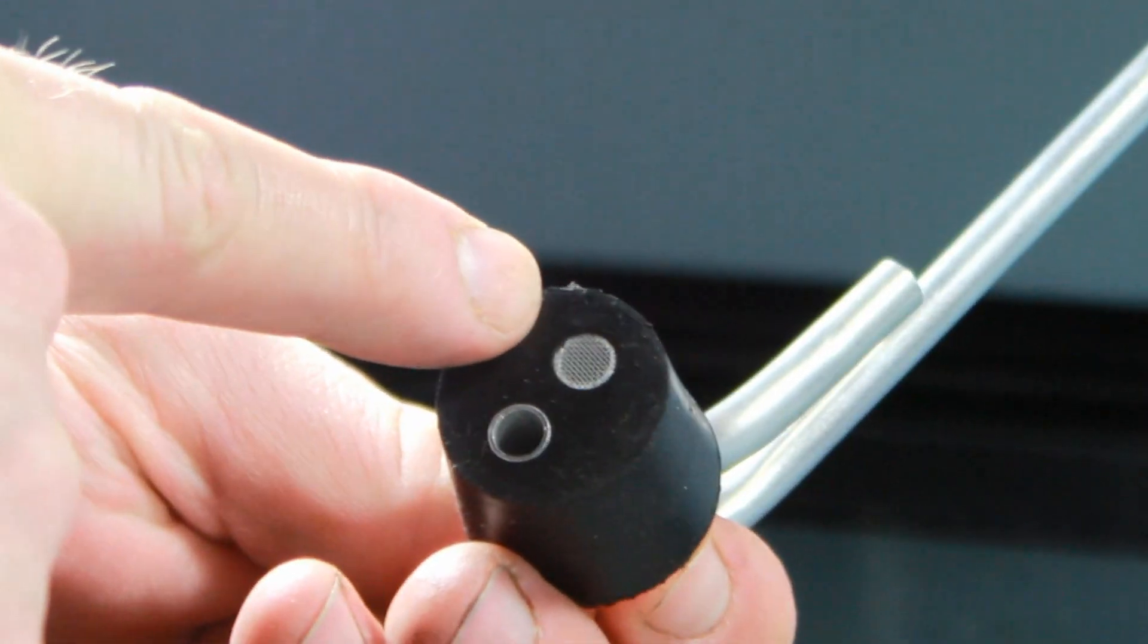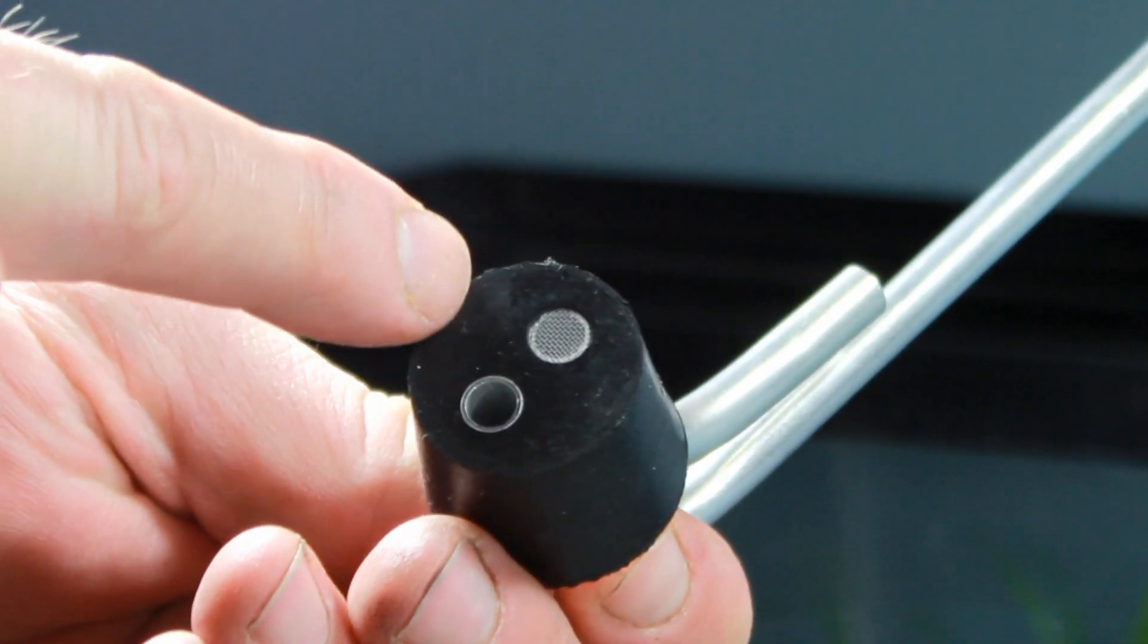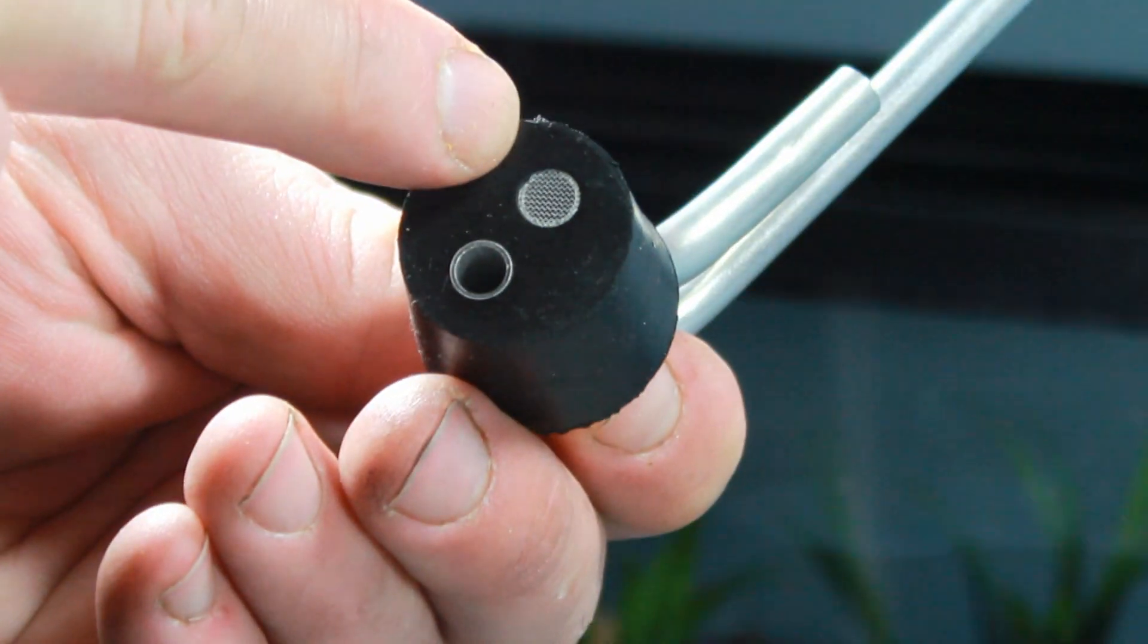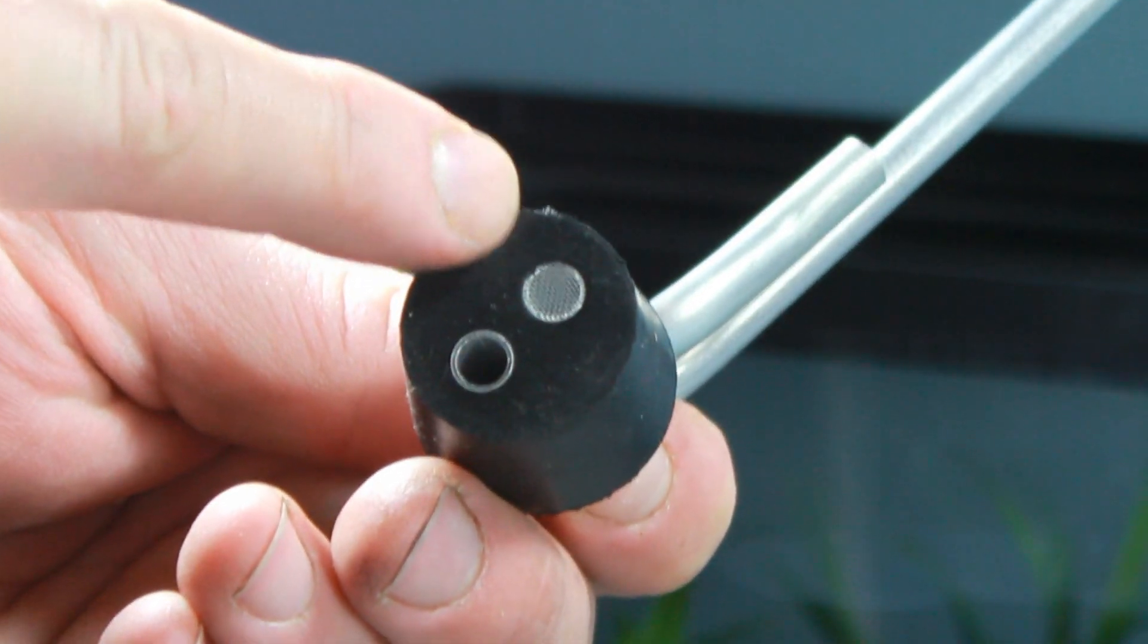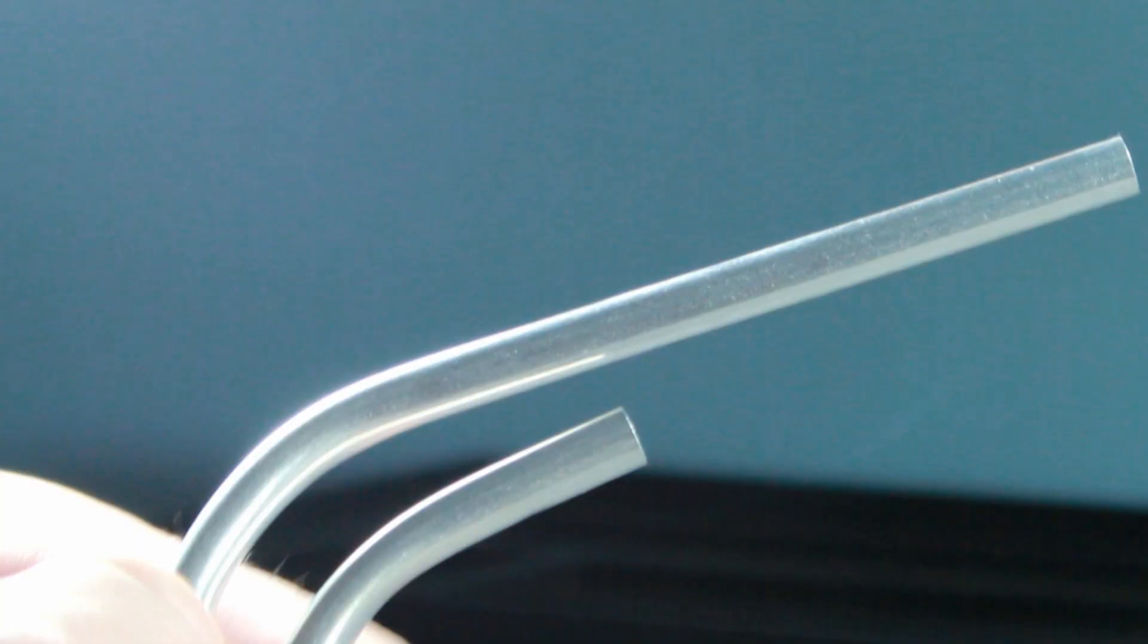This is the lid on the aspirator itself. One hole with the screen, one hole is open. The hole with the screen goes to the piece that you're going to be inhaling or sucking into. This pulls the ants into the vial.